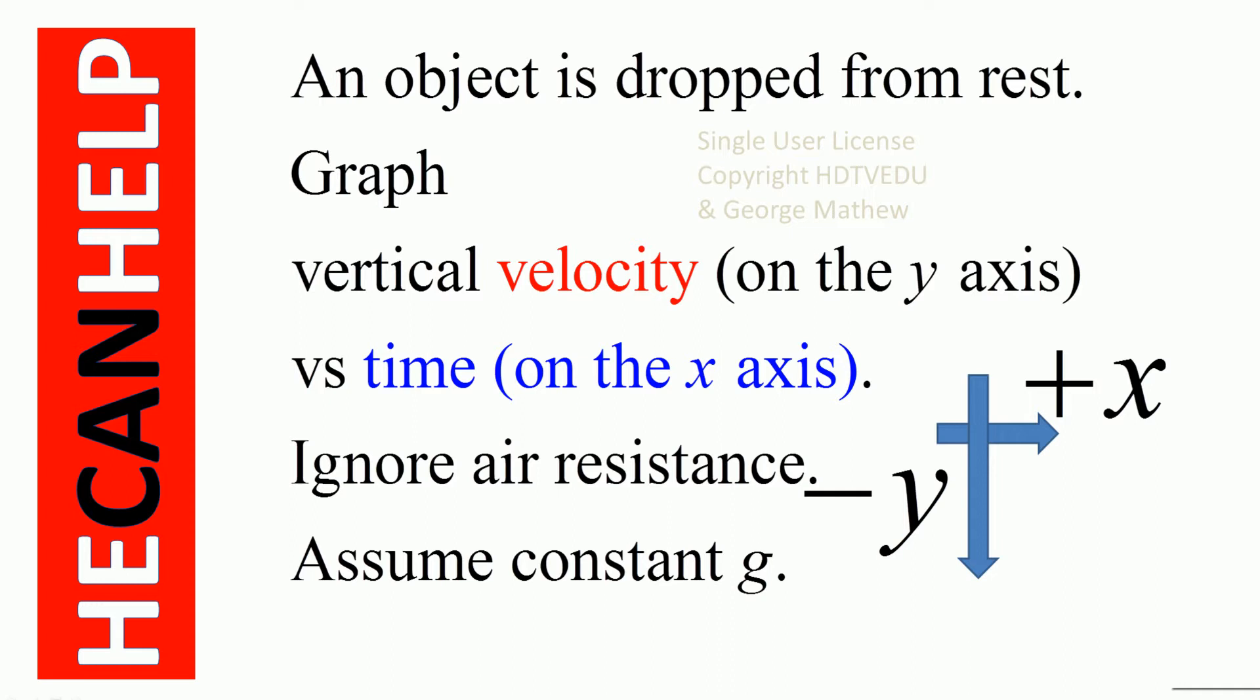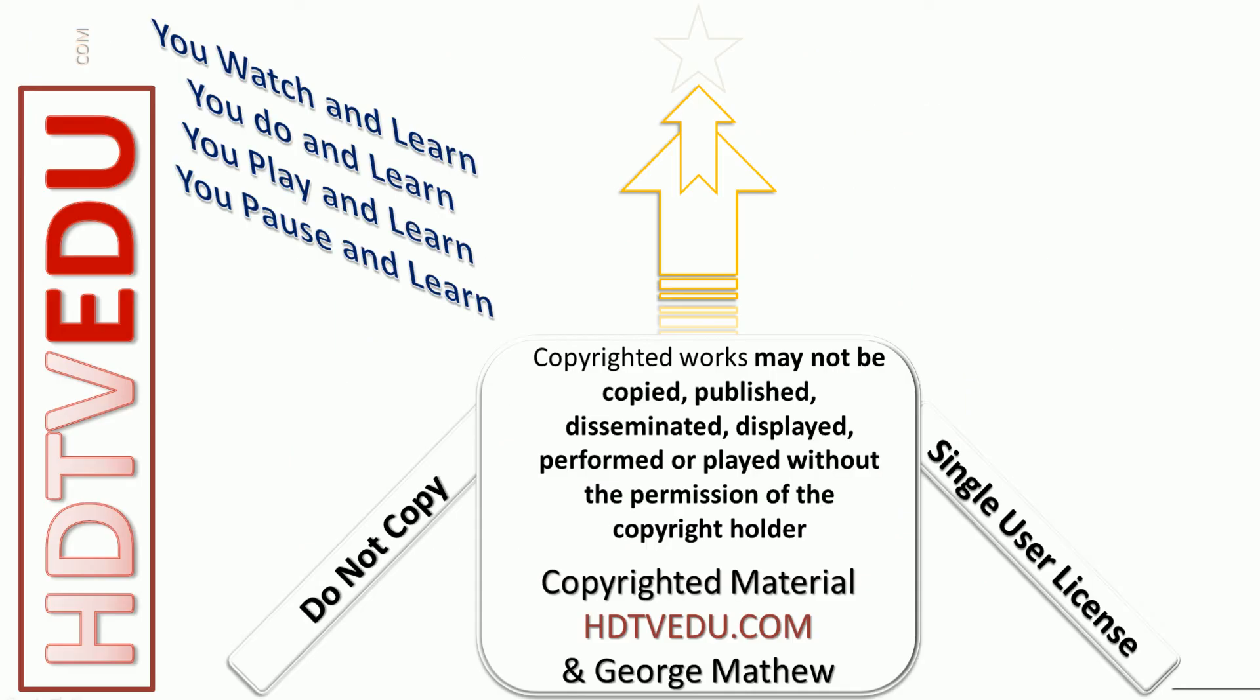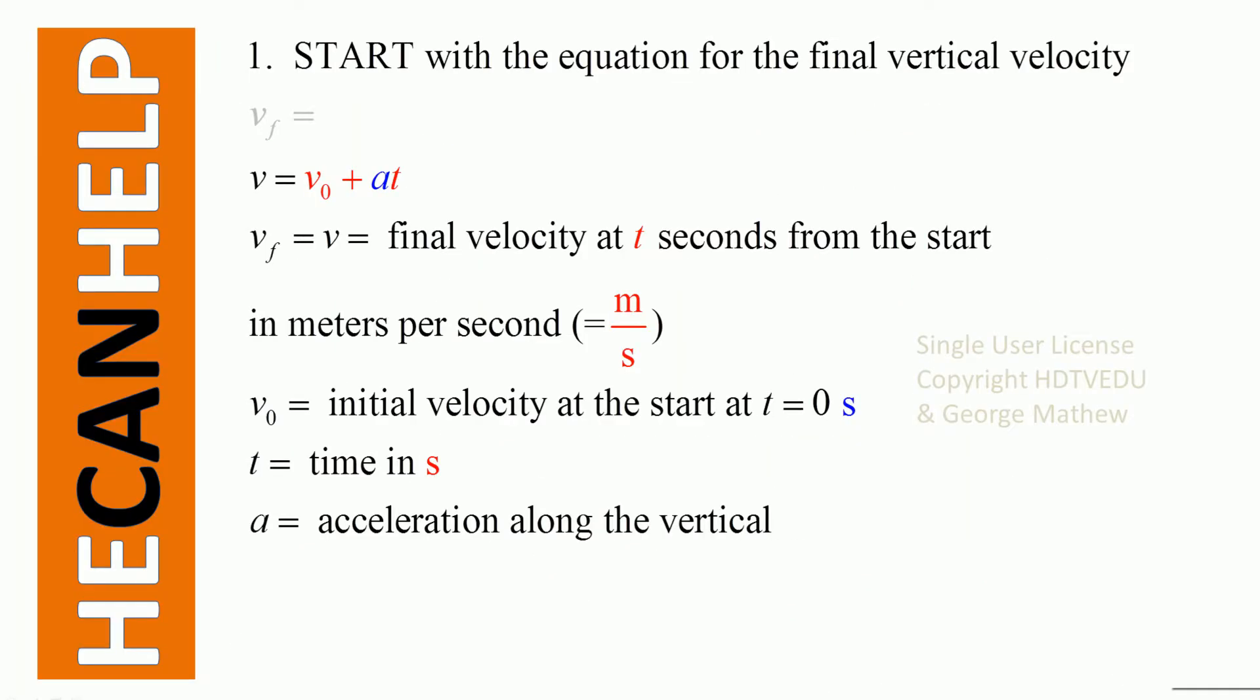We are told that positive x is to the right, horizontally to the right, and negative y is vertically down. So we want final vertical velocity versus time.